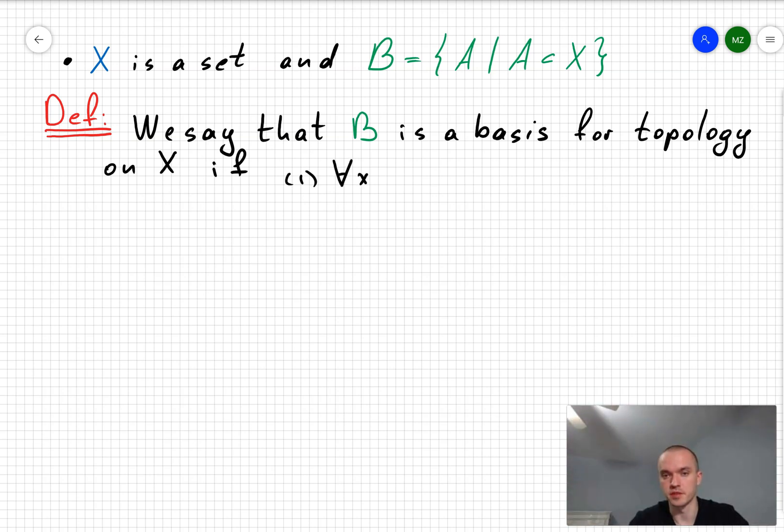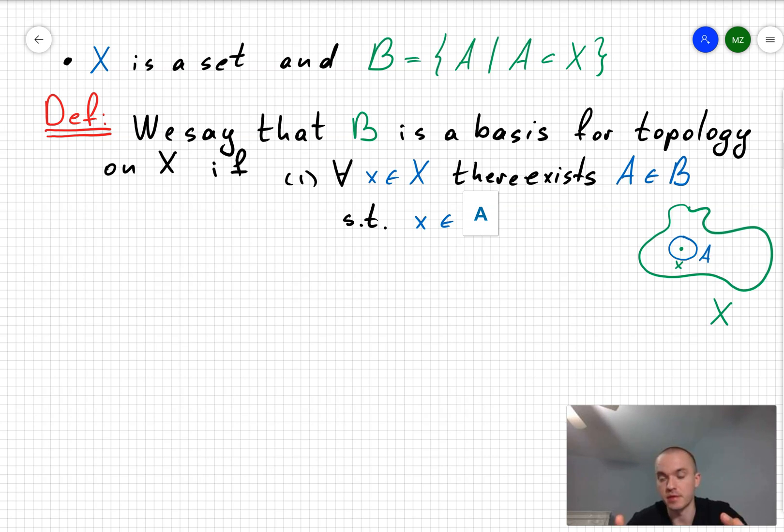So first condition is some sort of existence. If you're going to take any element in our set X, we always want to find some element A in our base, so some subset of X, such that our element x is going to belong to the subset.